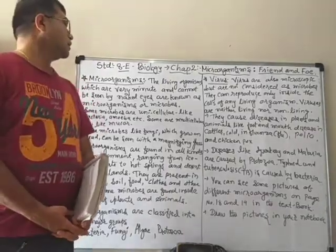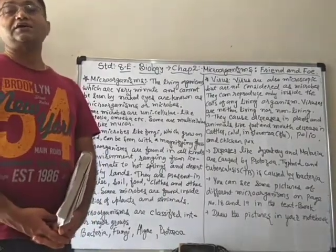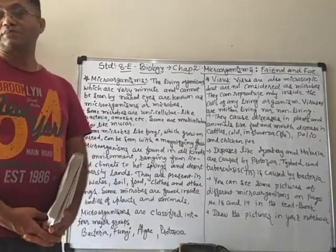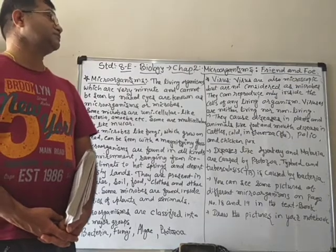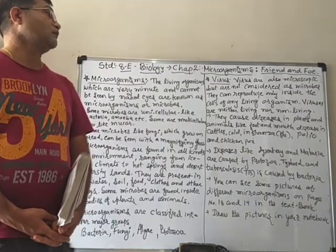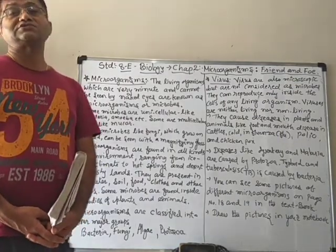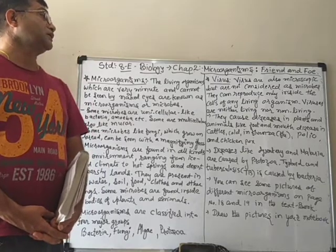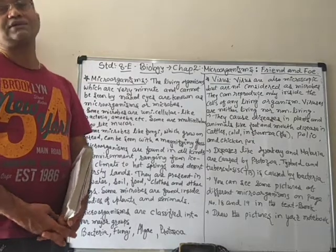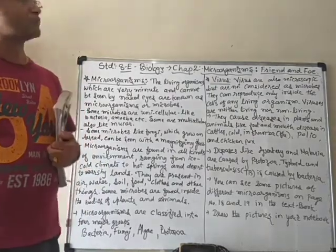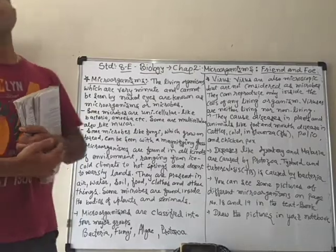Students, Standard 8, English medium. In biology, we are going to start chapter number 2, that is the micro-organisms: friend and foe.